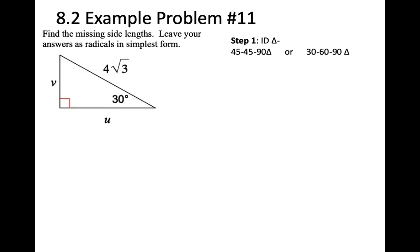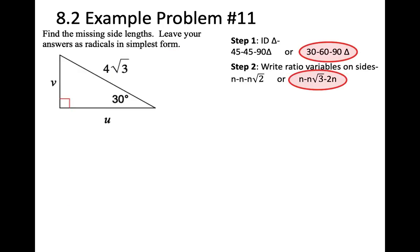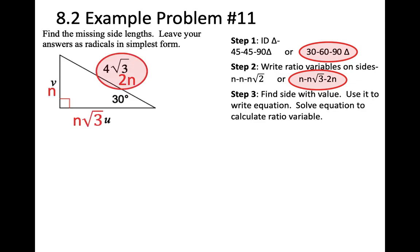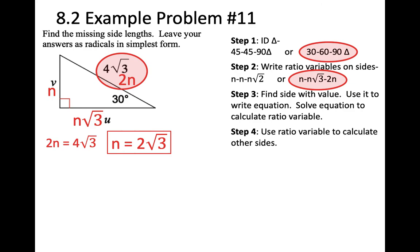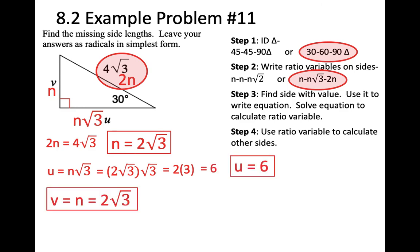Problem 11: it's a 30-60-90 with ratios N, N root 3, 2N. Find the side with a constant and write the equation — N equals 2 root 3. Use step 4: U equals N root 3, which is 2 root 3 times root 3, giving 2 times 3, which equals 6. V equals N, so V equals 2 root 3.